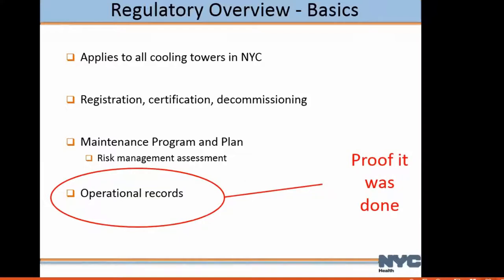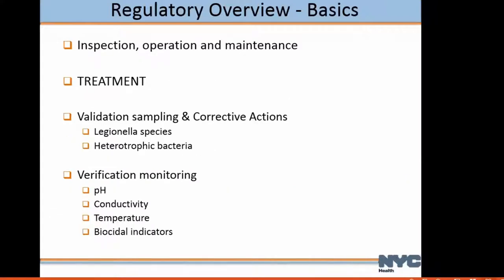The operational record is another big requirement — this is proof that what you said you were going to do in your plan, you actually did. You've got to write it down. What gets written down gets done; what gets measured gets done. The regulations also provided some minimums with regards to inspection, operation, and maintenance. Probably the biggest minimum is treatment — it required cooling tower systems to have treatment.